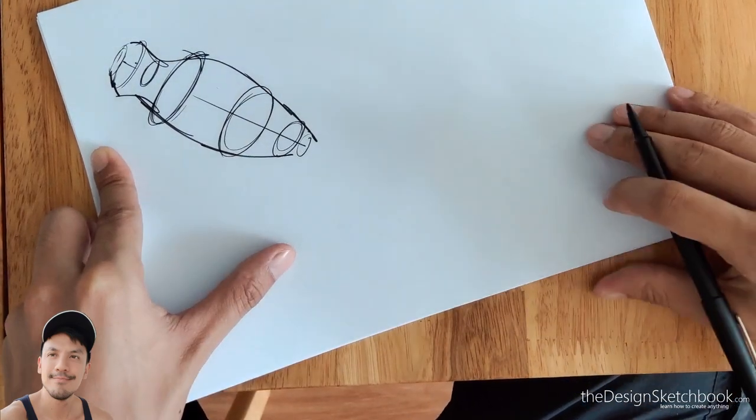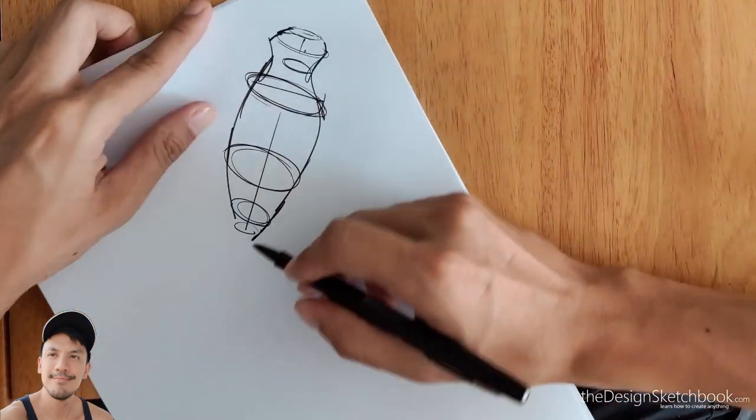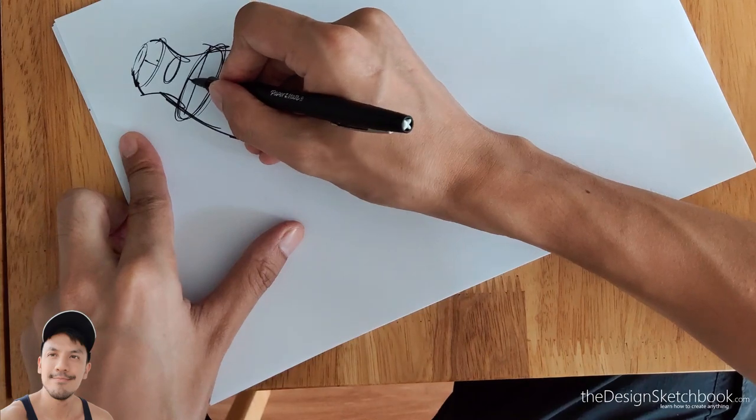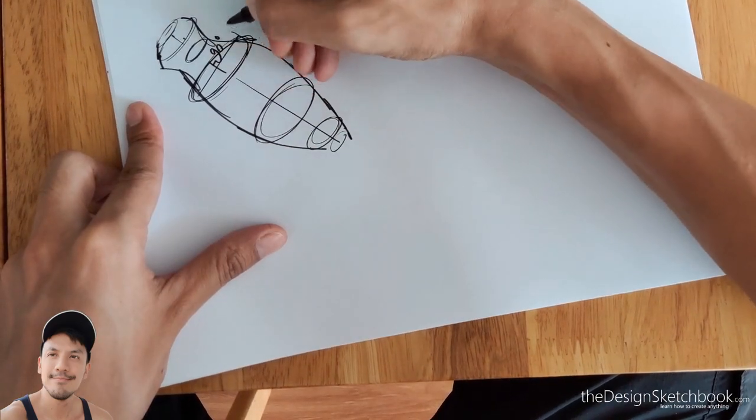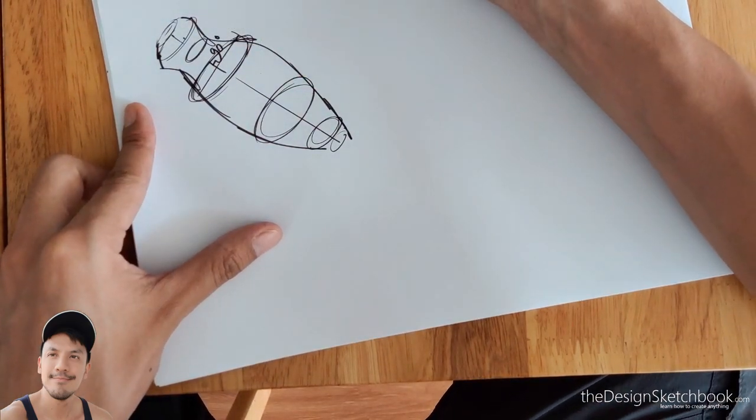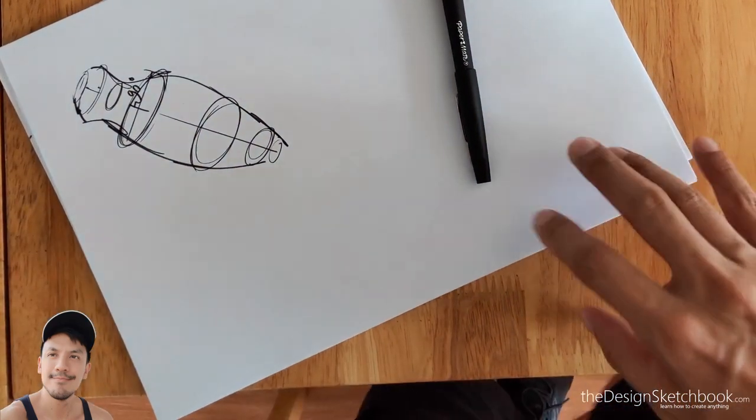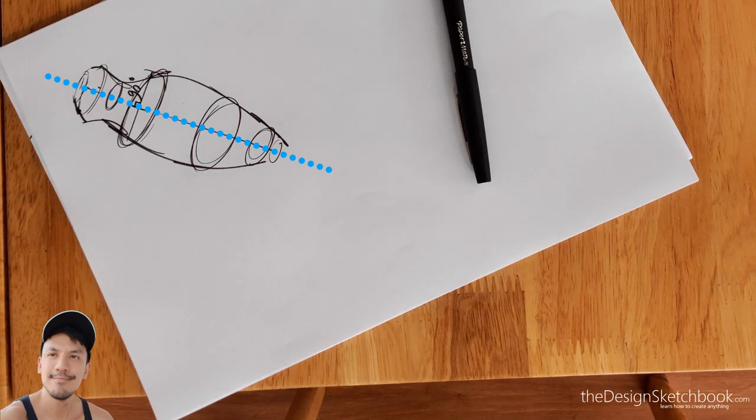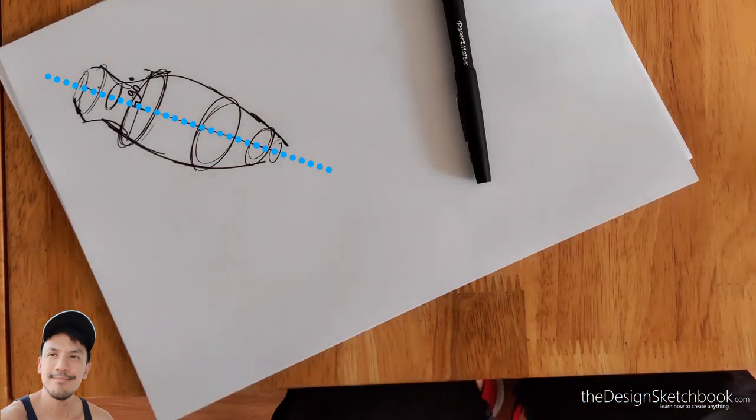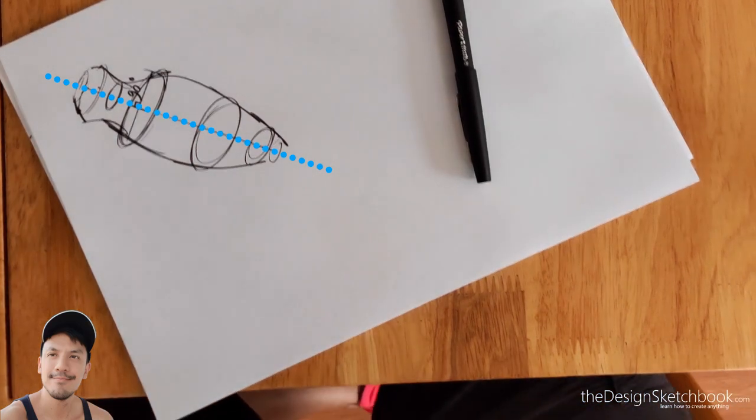Don't worry if it's a bit too fast right now, I'm going to decompose it step by step. Make sure that your ellipse is at 90 degrees from the axis. Think that the very long axis, what we call the minor axis, is your symmetry axis as well.